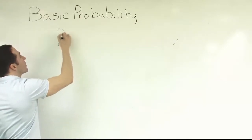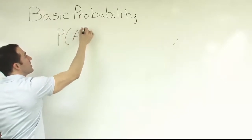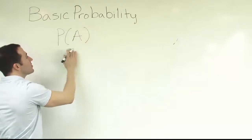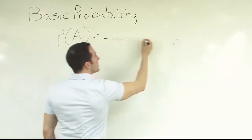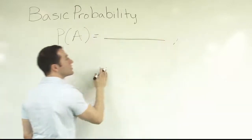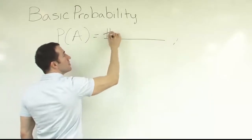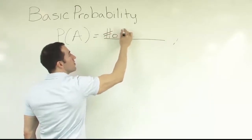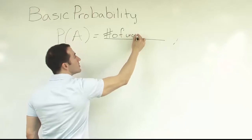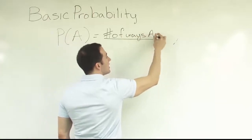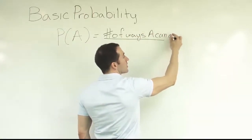In that definition, we start with a formula — the probability of A. This is just basic probability, meaning it's going to be a single fraction, and the fraction is going to have this following structure: it's going to be the number of ways A can occur...